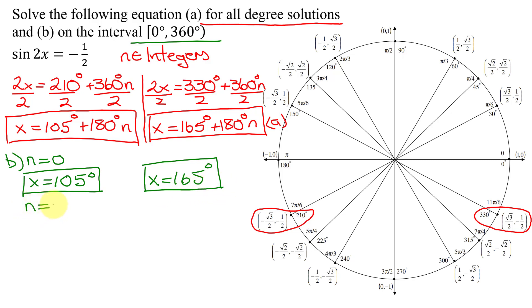But now I also have to plug in when n equals 1. So I'm going to get x equals 105 degrees plus 180 degrees times 1, which is just 180. So I'm going to have 105 degrees plus 180 degrees, which is 285 degrees.